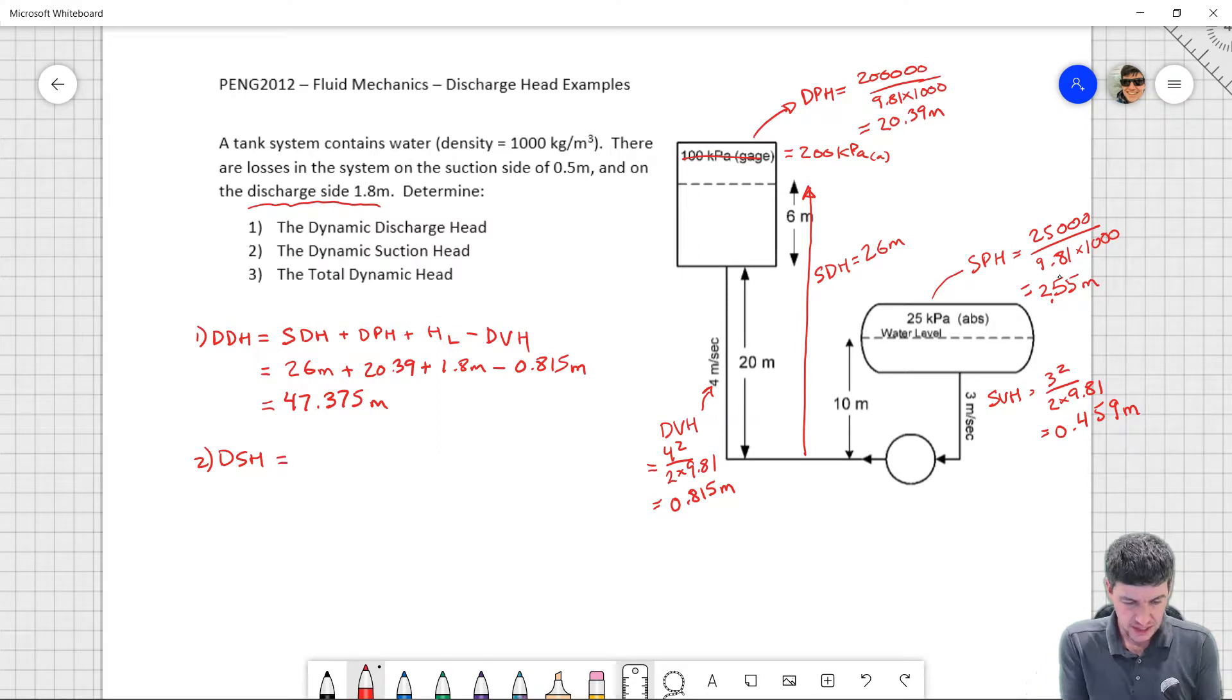So my dynamic suction head is going to be my static suction head plus my static pressure head minus my losses on the suction side minus my static velocity head, or sorry, my suction velocity head. So I have a static suction head of 10 and I have a suction pressure head of 2.55. I have a loss of 0.5 and I have a velocity head of 0.459. And if I add those all up together, I get 11.591 meters.